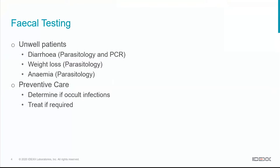The indications for faecal parasitology can be divided into two groups. First, unwell patients — those with acute or chronic diarrhoea should have parasitology performed in every case. Parasitology is also important for unexplained weight loss, especially in younger animals, and in patients with regenerative anaemia consistent with blood loss. Hookworms or whipworms may be causing anaemia that is very easily managed if diagnosed.